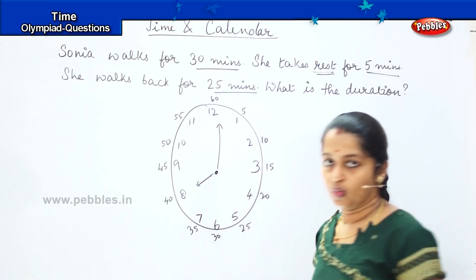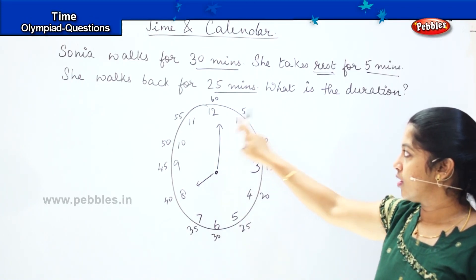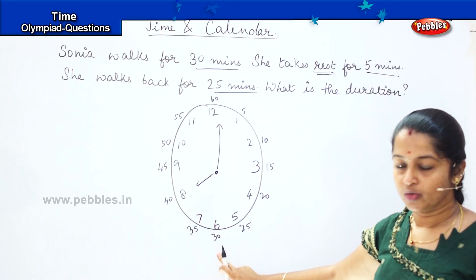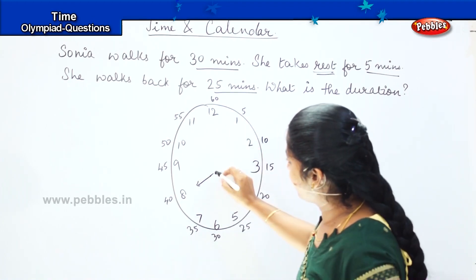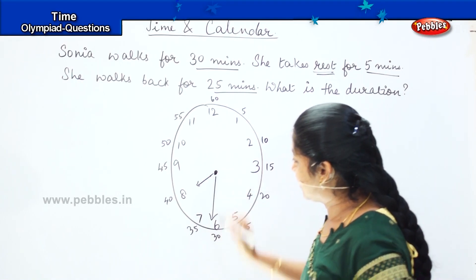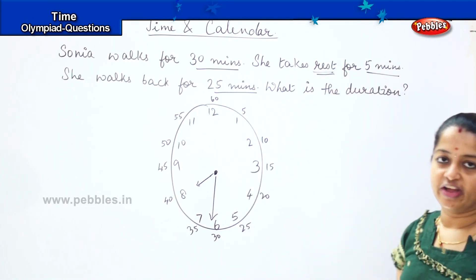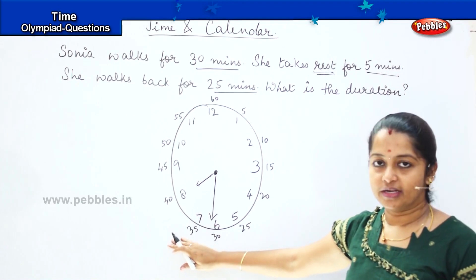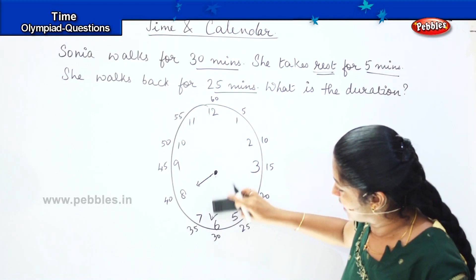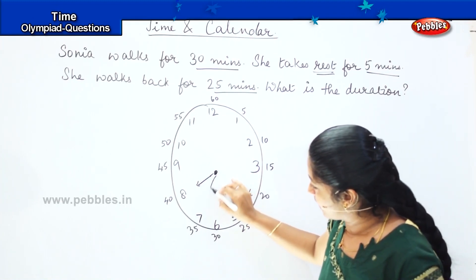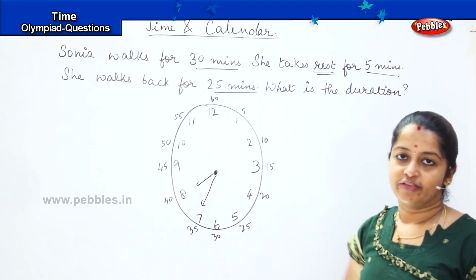So now they say she walks for 30 minutes. Starting from 8 o'clock — 5, 10, 15, 20, 25, 30 — which means she continues walking for 30 minutes. Starting from 8 o'clock, she will complete walking at 8:30. After that, she is taking rest for 5 minutes. So from 8:30 to 8:35, she is taking a break of 5 minutes. Now the time is 8:35, so totally she has covered 35 minutes.